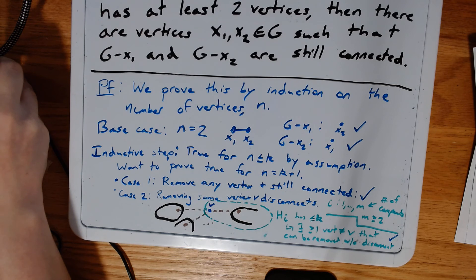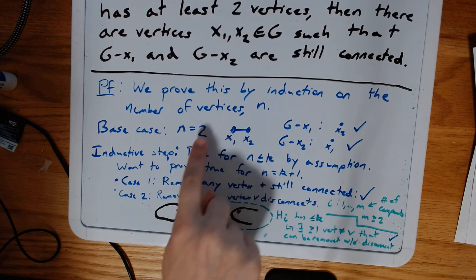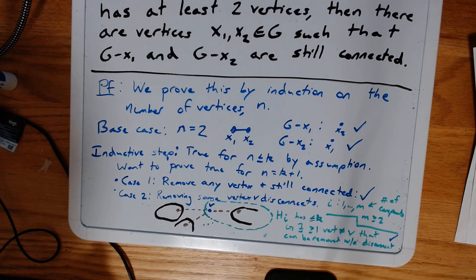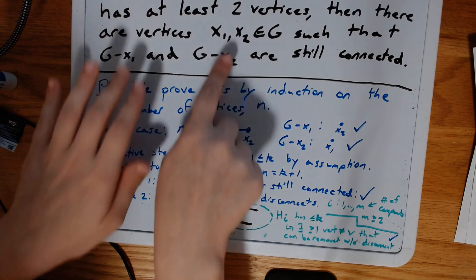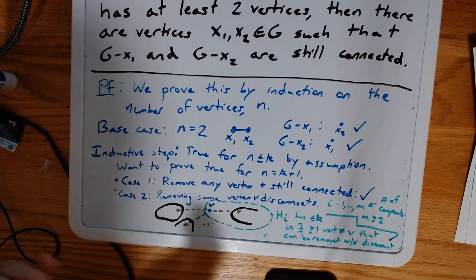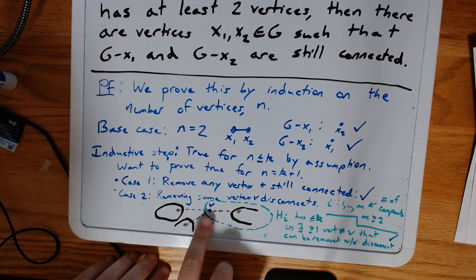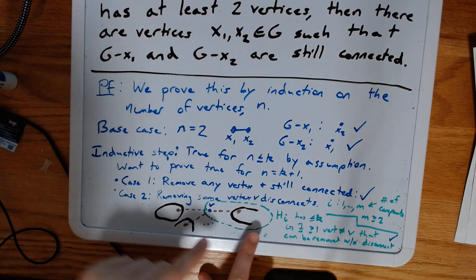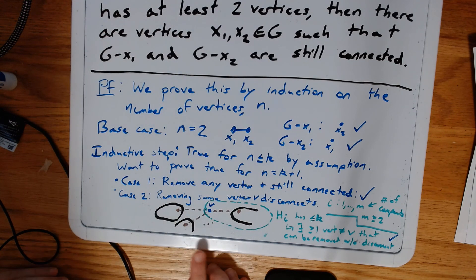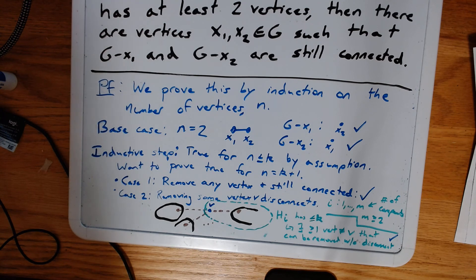So what was the idea here? We inducted on the number of vertices, checked our base case — that wasn't too hard. In the inductive step, we assumed that our desired claim was true for any smaller graph, so that when we removed a vertex that disconnected the graph, we could assume our claim was true for the components we were left with. This is an example of a strong induction proof on graphs. Thank you.